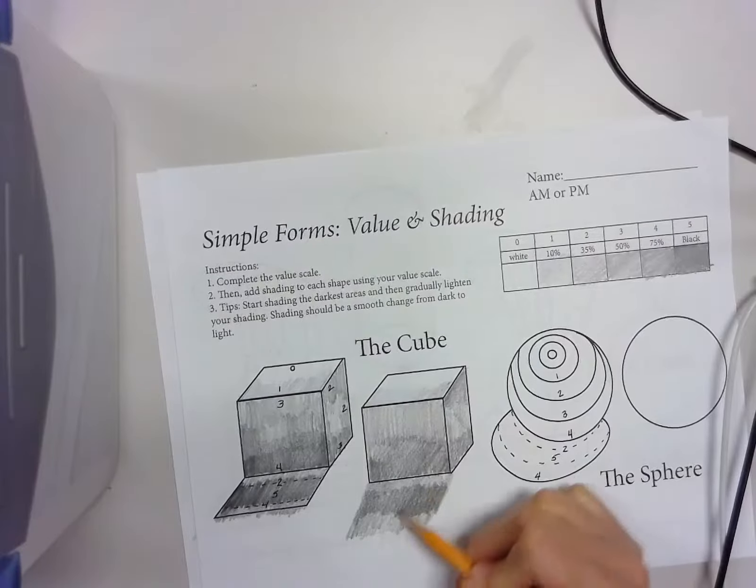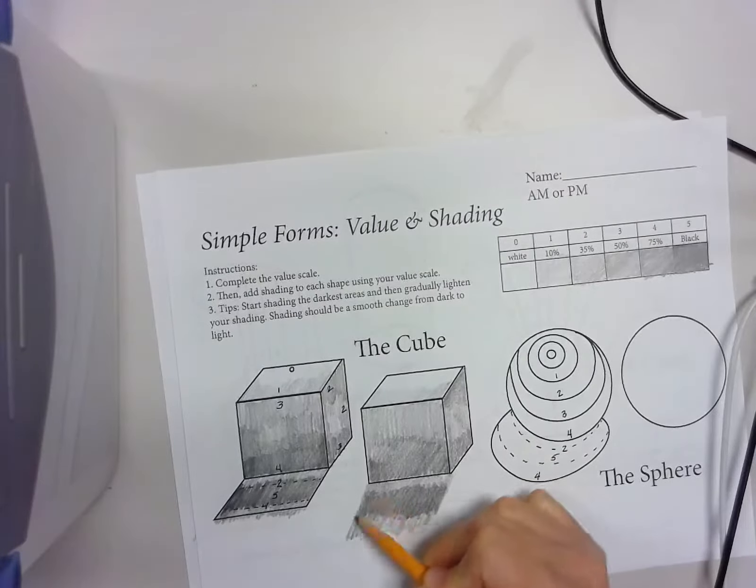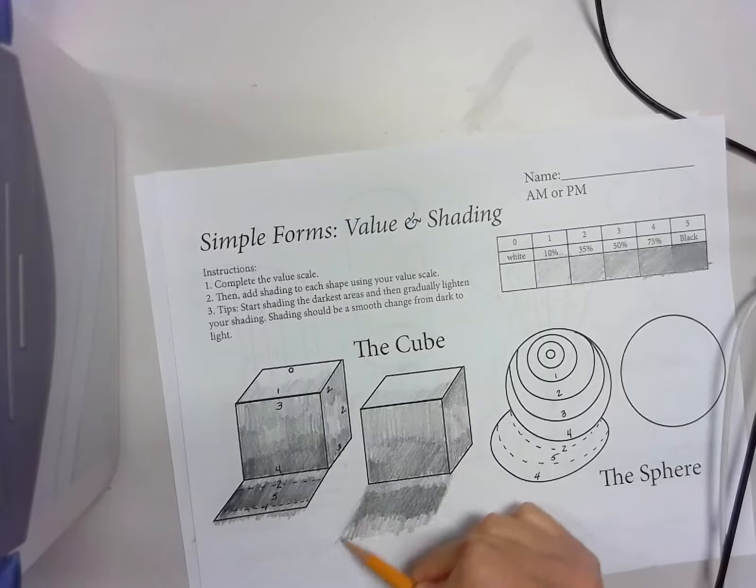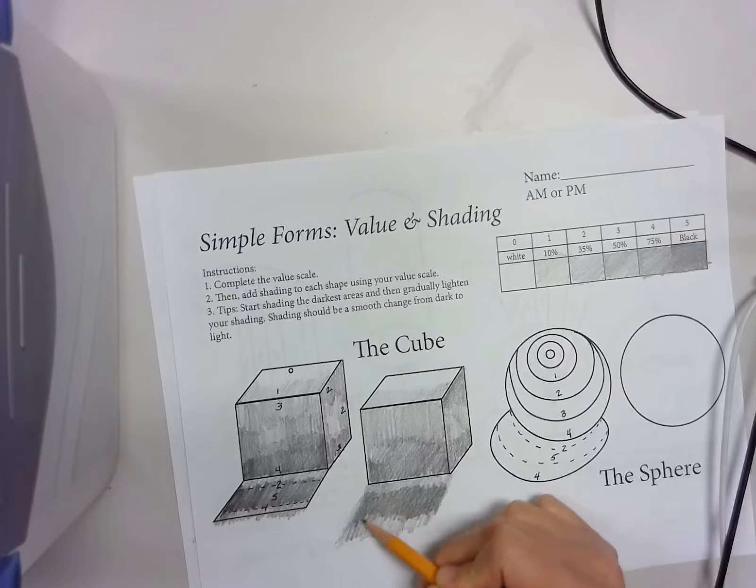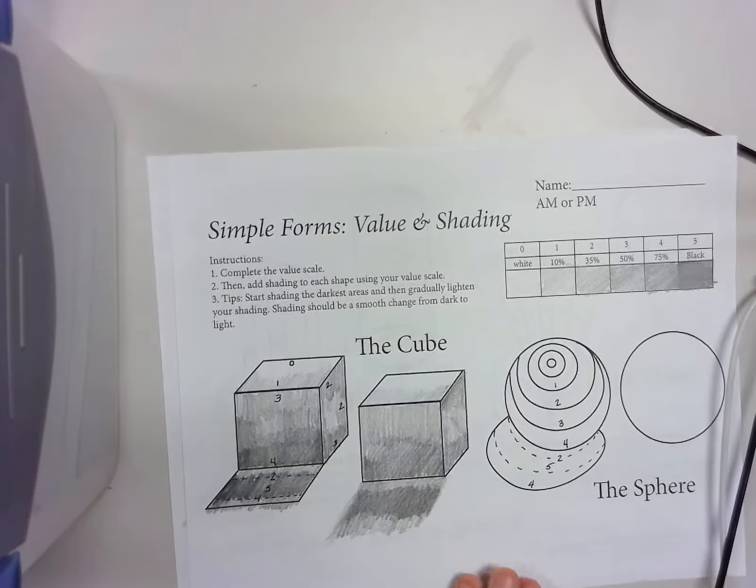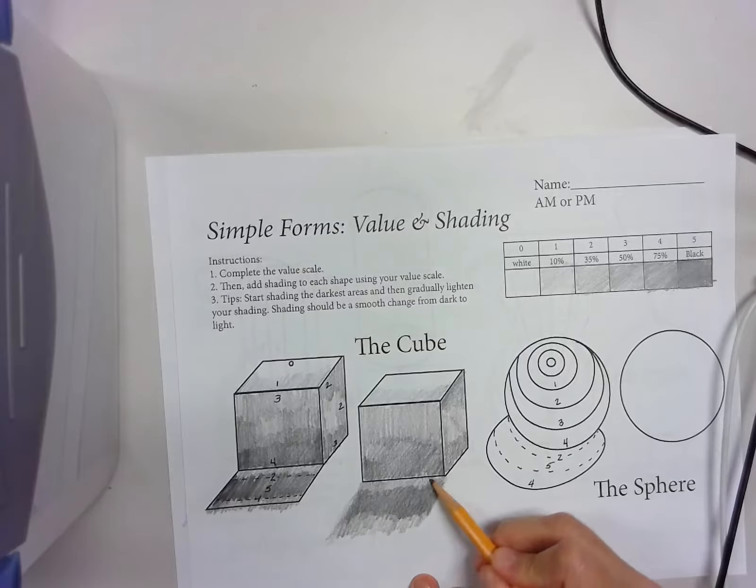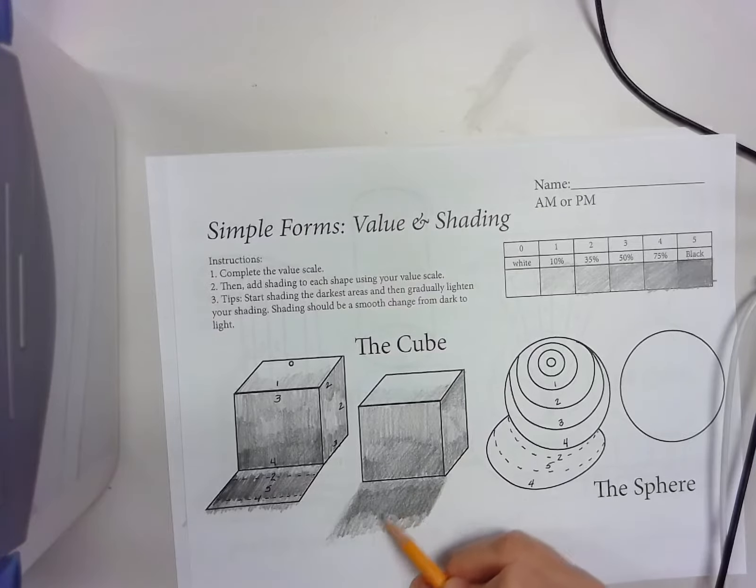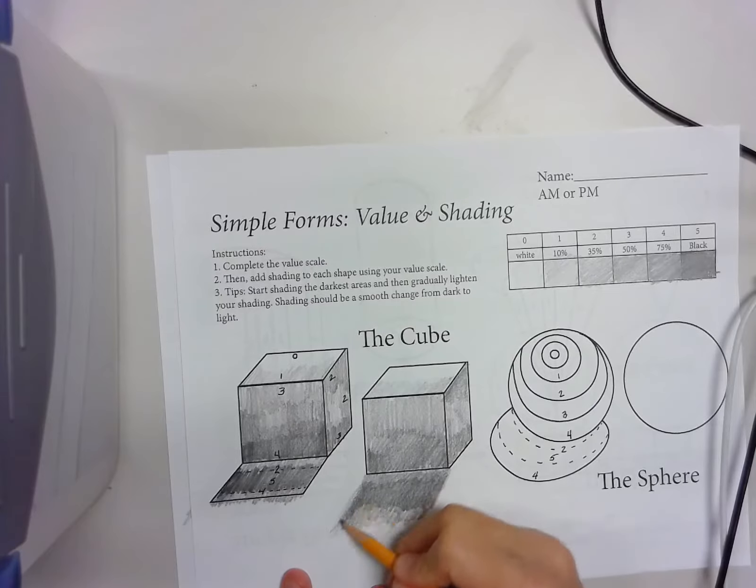It's nice if you have softer pencils, because pencils come in different hardnesses. I have a number 2 pencil. It's okay, but if you can buy a set that has some different hardnesses and soft graphite on it, it makes it easier to get those value changes.